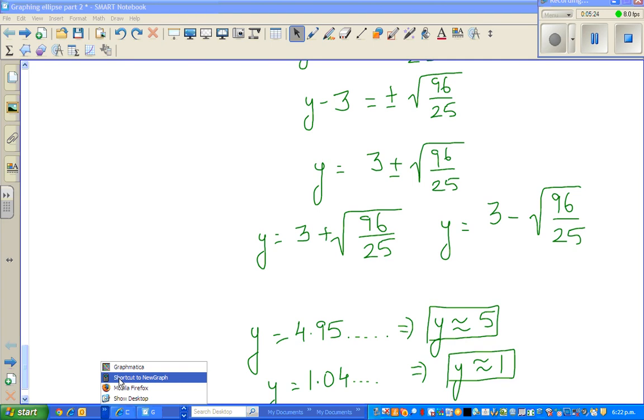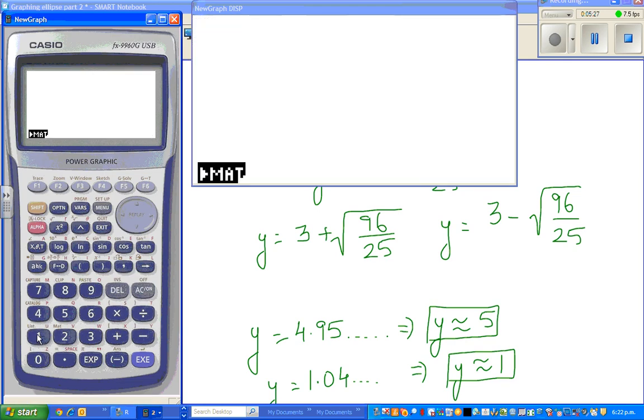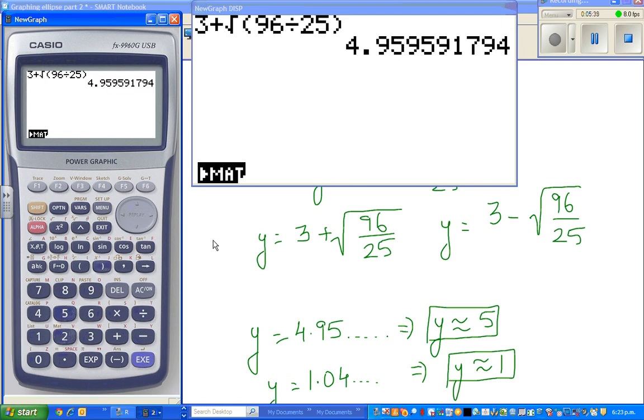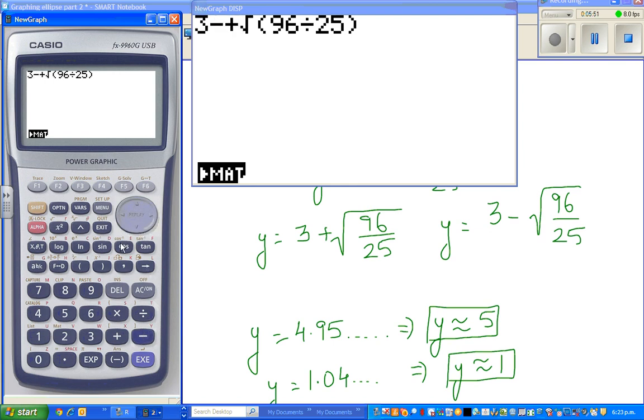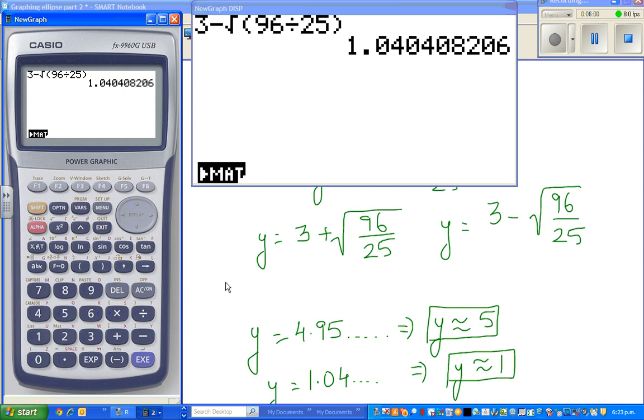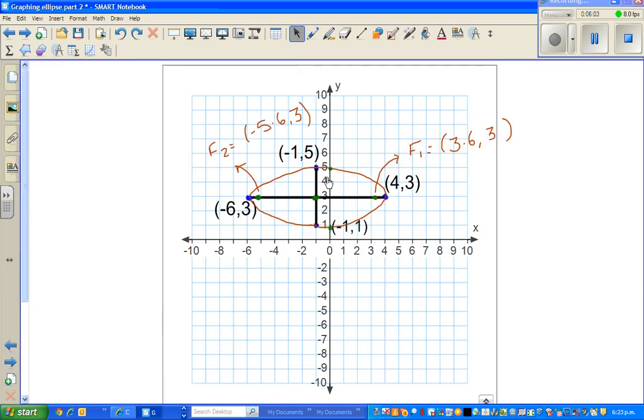So you go to graph, and so you have got 3 plus square root of, I'll put this in the bracket, 96 divided by 25, close the bracket, equal, that is 4.95, this big number, that's almost 5. And if you put a minus there, and I'll delete, that will be minus 1.04, and that's almost 1. And that's why, when we look at the graph, this is almost 5, and this is almost 1.